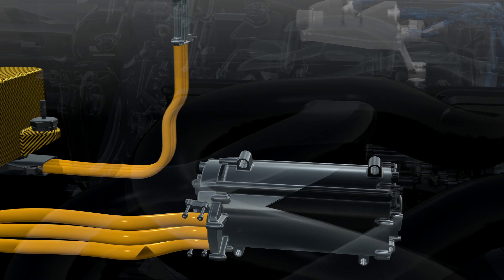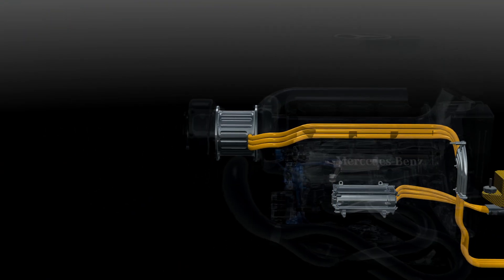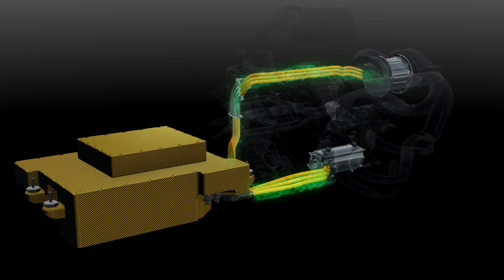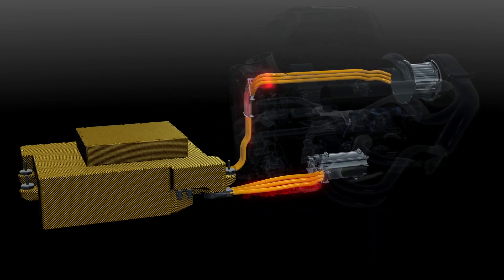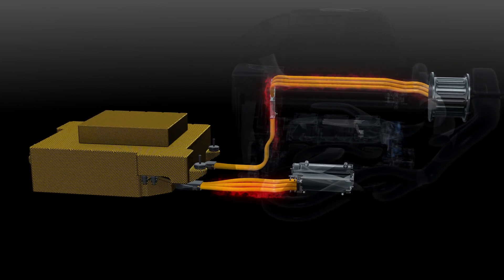The MGU-K that harvests braking energy like the previous KERS system and the MGU-H, which is harvesting the turbo energy. Both send power to the energy store when working as generators and when deployed act as motors fed by the battery or each other's energy.